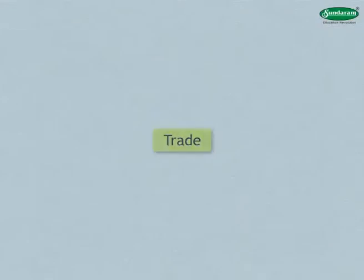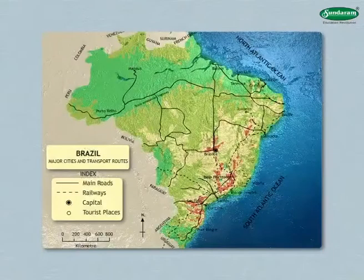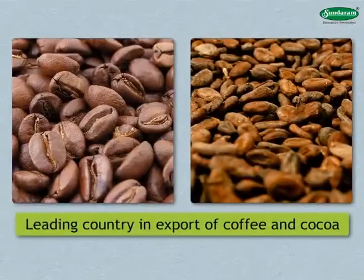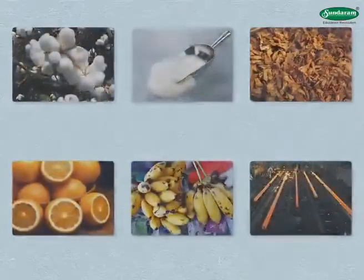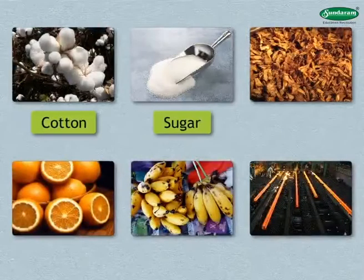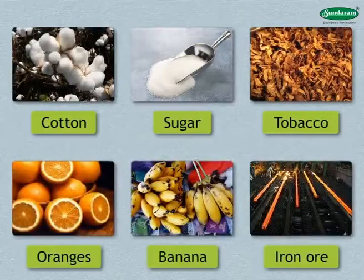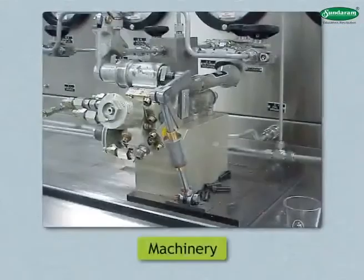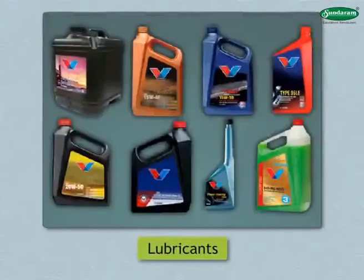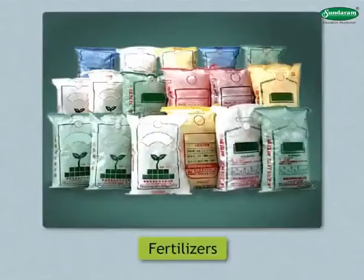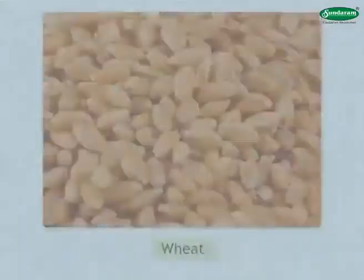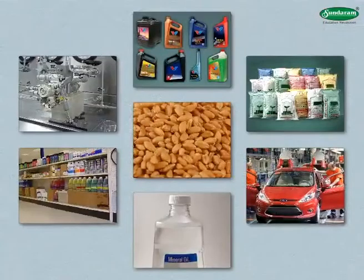Agricultural products have a major share in Brazil's export list. It is a leading country in the export of coffee and cocoa. Besides these, cotton, sugar, tobacco, oranges, banana, and iron ore are also exported. Imports include machinery, mineral oil, lubricants, chemical products, fertilizers, heavy vehicles, and wheat.